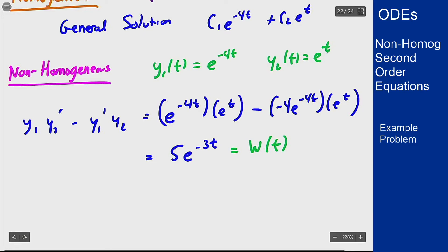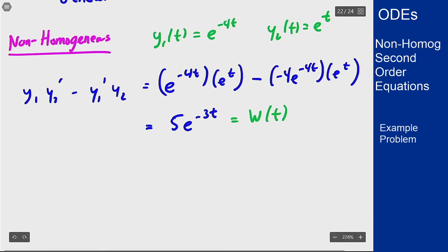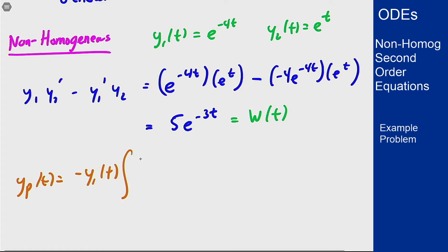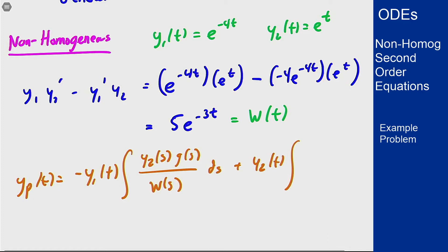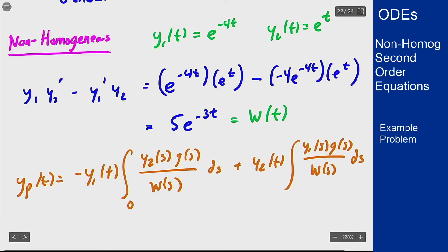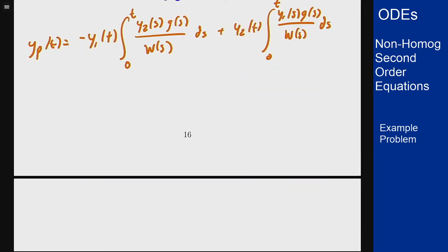Our formula says that by variation of parameters, the particular solution yp is: negative y1 times the integral of y2 times the right-hand side over the Wronskian, plus y2 times the integral of y1 times the right-hand side over the Wronskian. For convenience we'll use 0 as our lower limit and t as our upper limit of integration — you can pick any lower limit, we'll just use 0 because it's easy.